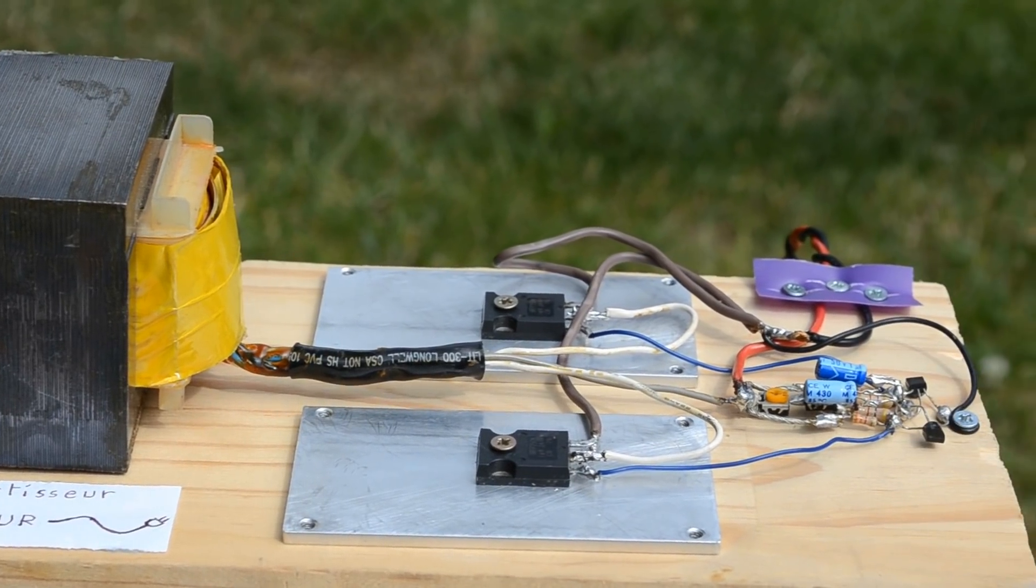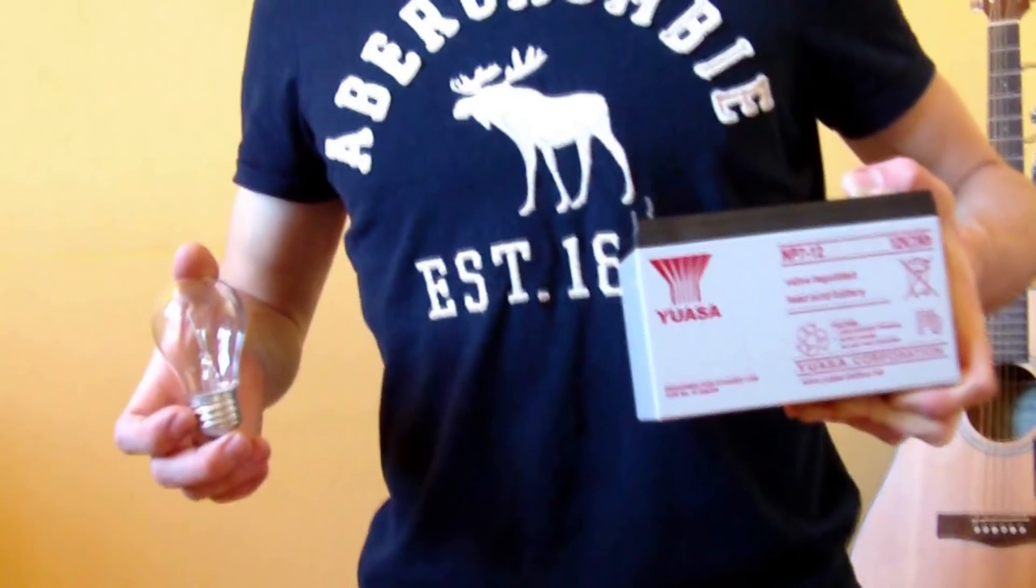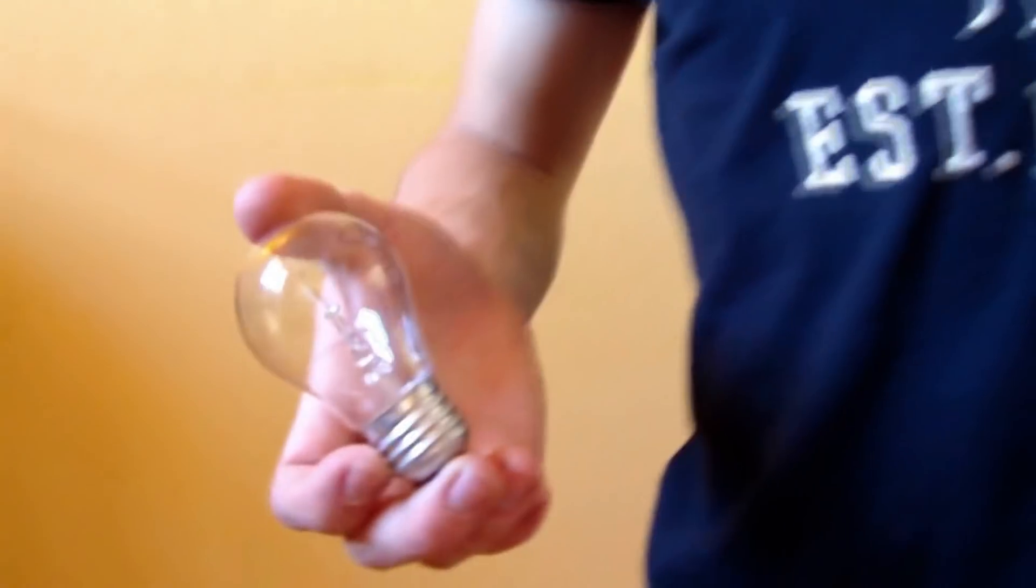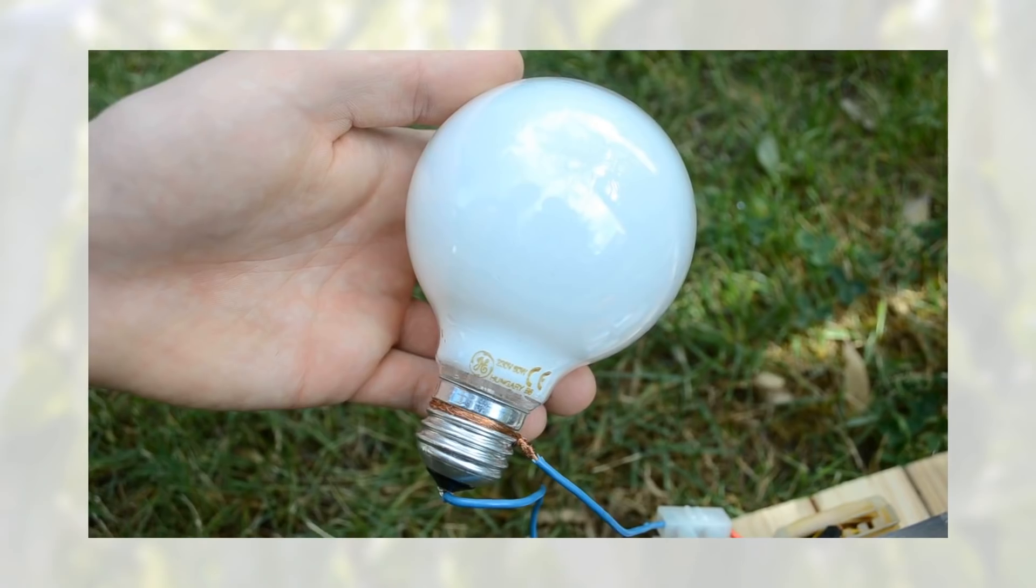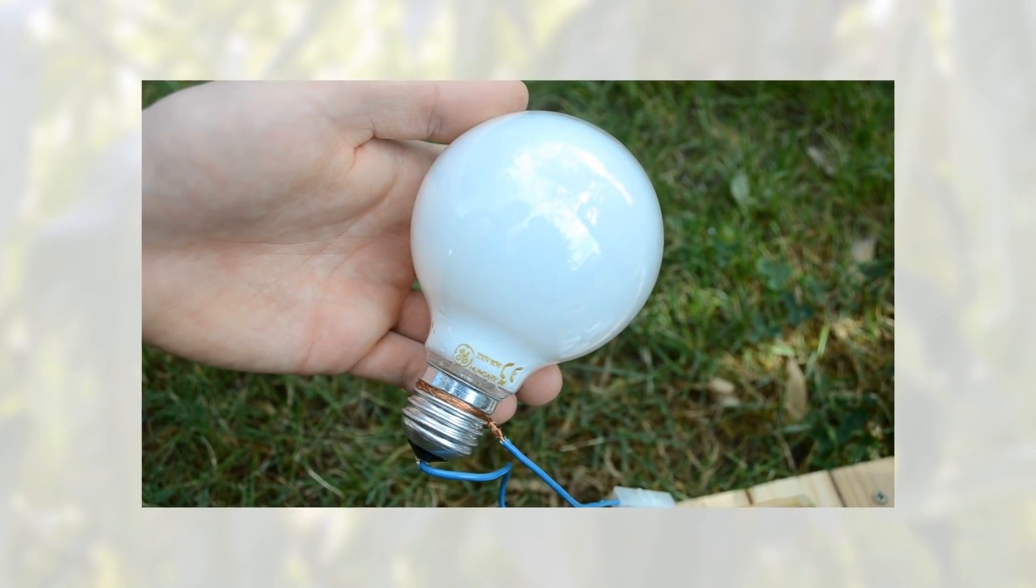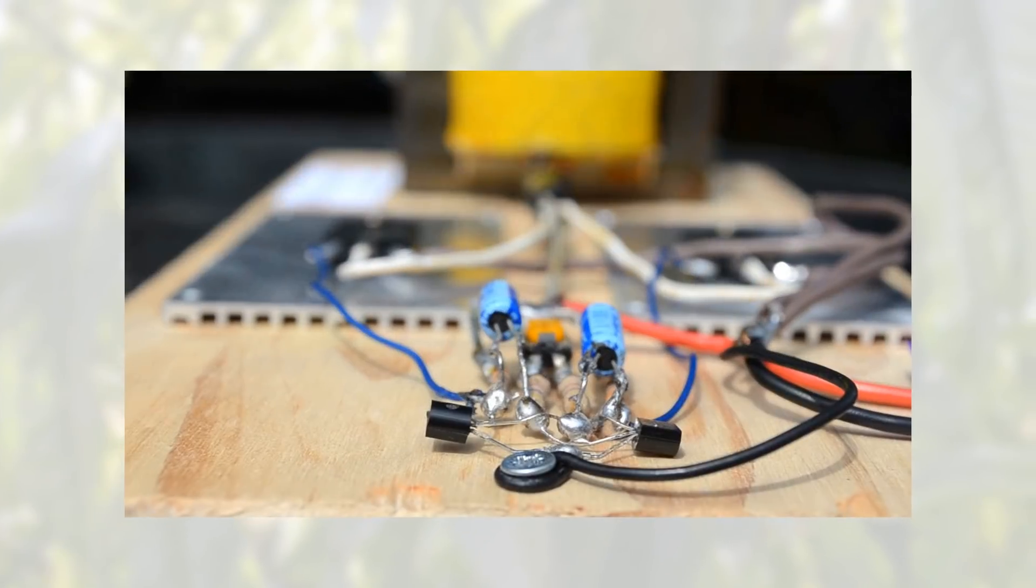Hi everyone, today we'll show you how to make an inverter. An inverter provides power to objects working on alternating current with only a 12V battery. First we'll test our inverter on different devices, then we'll show you how to create yours.